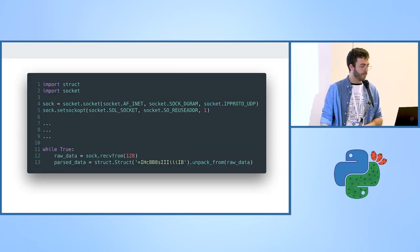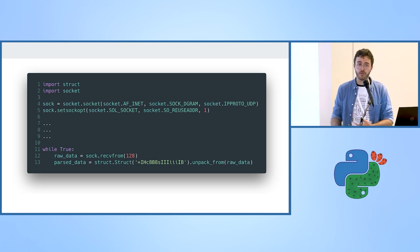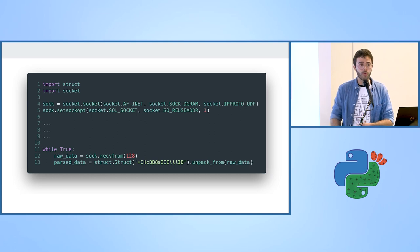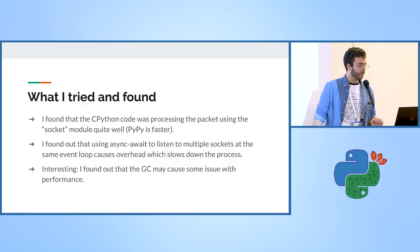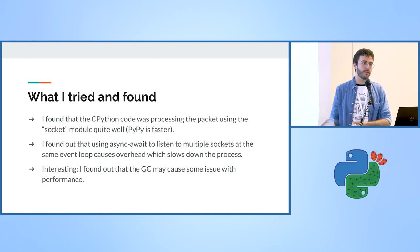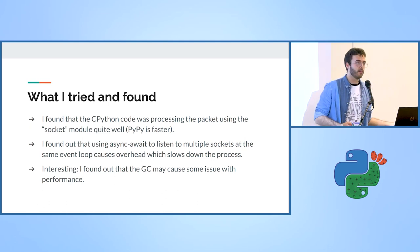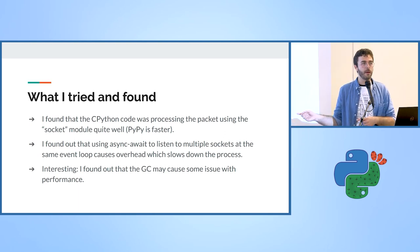The data from the UDP socket is in a custom binary protocol, which should be fast to parse. I connect using the socket module and use the struct module to parse it. I had gaps, especially at the close which is very hectic. I measured CPython and found the struct module and socket module were fast, however PyPy was faster.